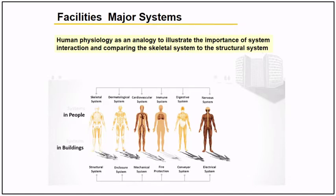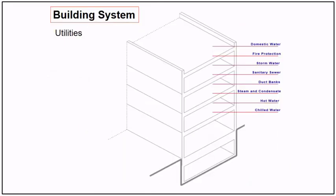Nothing should be neglected, or the entire system will suffer. Now let's go to the detail. Here are the utilities that need special maintenance strategy, preventive maintenance services, frequency, and routine inspection — specifically: supply of domestic water, fire protection water supply, storm water management, sanitary water management, steam and condensate, hot water supply, and chilled water. You must have a tool to create a maintenance plan for those systems.